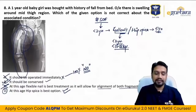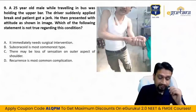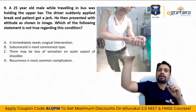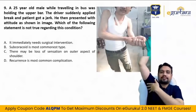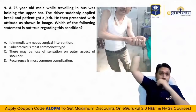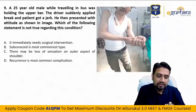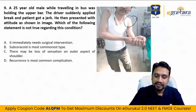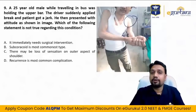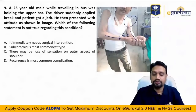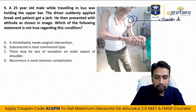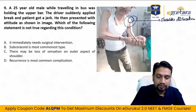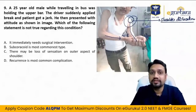Ninth question: a 25-year-old male was holding the upper bar in a bus — hand already abducted, hyperabducted. The driver suddenly applied brakes and the patient got a jerk. He presented with his arm in an abnormal attitude — abducted and somewhat externally rotated. Looking at the shoulder: there is a bony prominence and the contour of the shoulder is destroyed — most likely anterior dislocation.